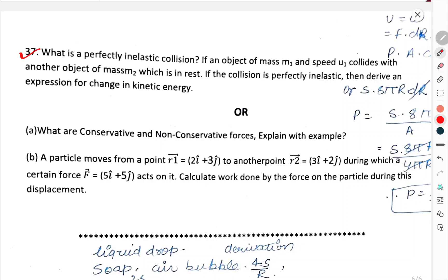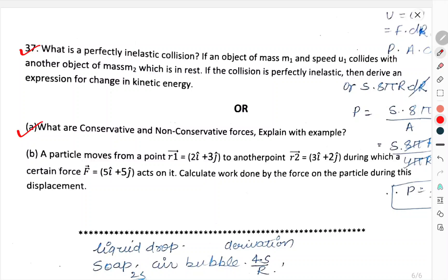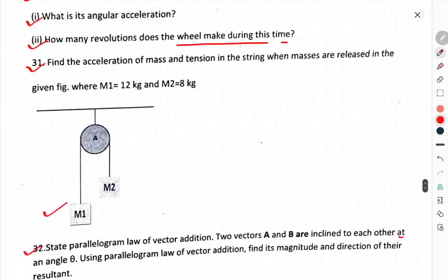Question number 37. What is a perfectly inelastic collision? An object of mass m1 and speed u1 collides with another object of mass m2 which is at rest. The collision is perfectly inelastic. Then derive an expression for the change in kinetic energy. Or what are conservative and non-conservative forces? Explain with example. A particle moves from r1 equals 2i cap plus 3j cap to another point r2 equals 3i cap plus 2j cap during which certain force 5i cap plus 5j cap acts on it. Calculate work done by the force on a particle during this displacement.